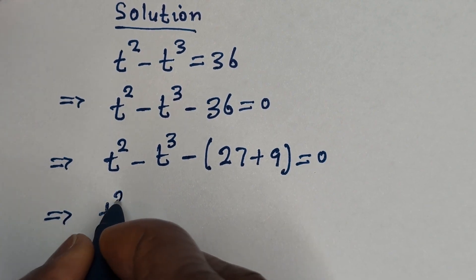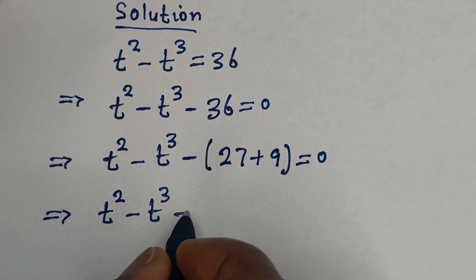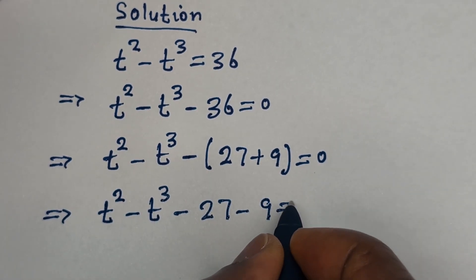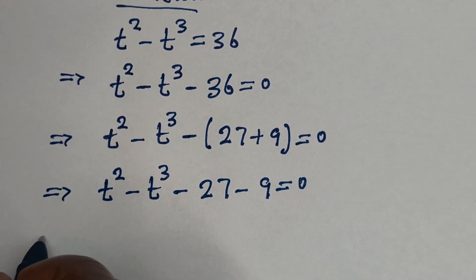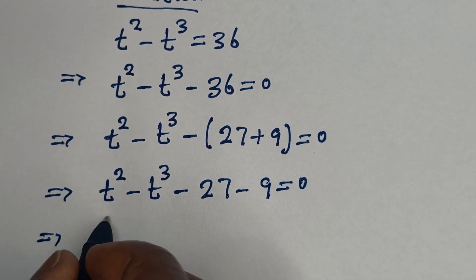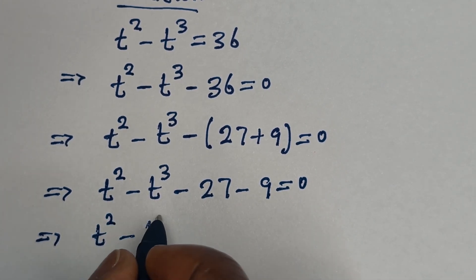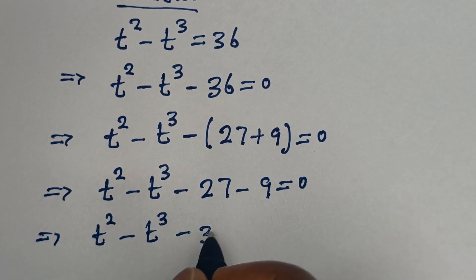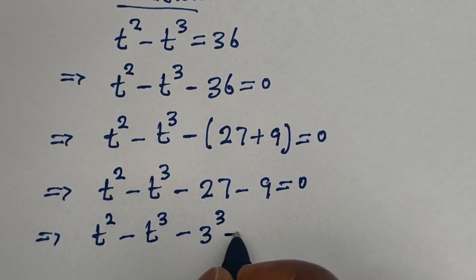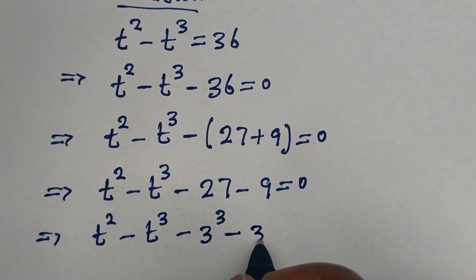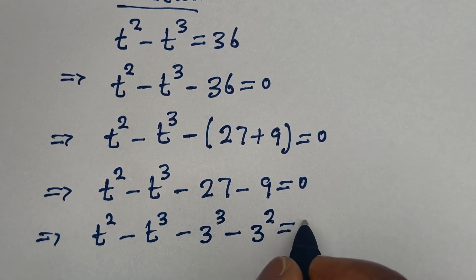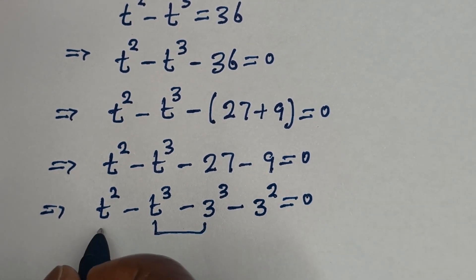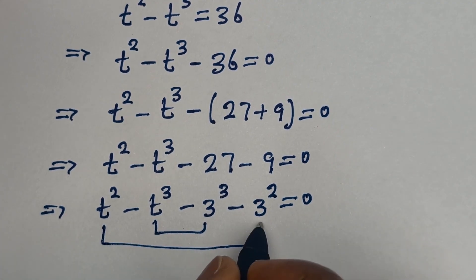So t squared minus t raised to power 3 minus 27 minus 9 is equal to 0. Here, t raised to power 3 minus 27 can be written as minus t raised to power 3, and minus 9 can be written as minus 3 squared, equal to 0. Now let us pair these terms together.